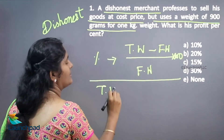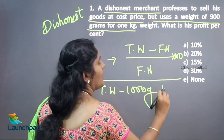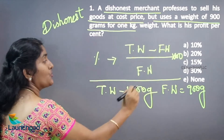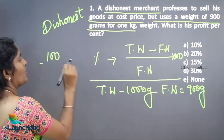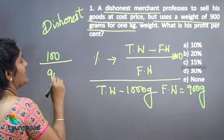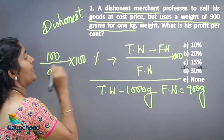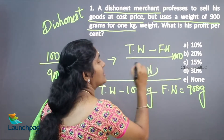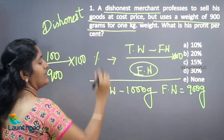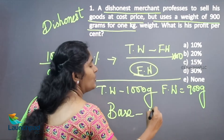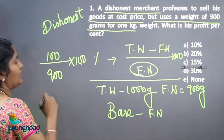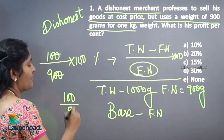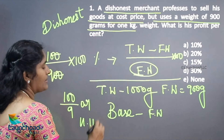Here your true weight is 1000 grams and false weight is 900 grams. So, true weight minus false weight is 100 grams, divided by false weight 900, into 100. Why divide by 900? Because the person used this false weight — the false weight is the base of this transaction. So we denominate by that value. 100 divided by 900 simplifies to 1 by 9, which equals 100 by 9, or 11.11% profit.